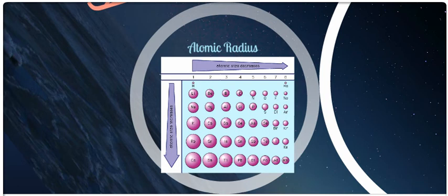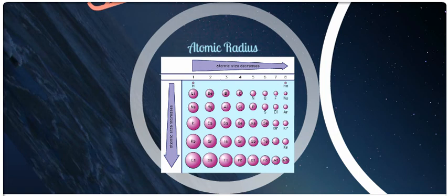The analogy I use for atomic radius is holding down the Snoopy balloon at the Macy's Thanksgiving Day Parade. Snoopy represents all the electrons, and us and the ground represent the nucleus. If only a couple of us are holding Snoopy, he's going to be really far away from the ground. If the whole class gets in and starts pulling down on Snoopy, he gets closer to the ground. So the greater the nuclear charge, the closer electrons get to the nucleus and the smaller the radius. Going from top to bottom, atomic radius increases because there are more and more shells — like adding Woodstock or Charlie Brown to Snoopy, giving a greater radius.